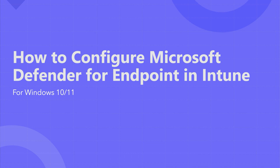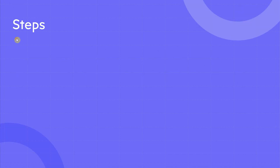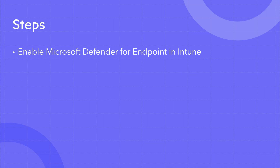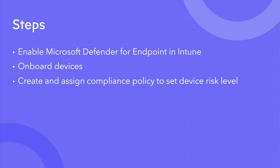Hello and welcome to Lessonciller. In today's video, I'm going to show you how to configure Microsoft Defender for Endpoint in Intune for Windows 10 and 11. There are four steps in this process. The first is enabling Microsoft Defender for Endpoint in Intune. The second step is creating a device configuration policy and applying it to devices that you wish to onboard to Microsoft Defender for Endpoint. The third step is creating and assigning a compliance policy to set device risk level, and the final step is creating a conditional access policy to enforce the compliance settings defined in step three.